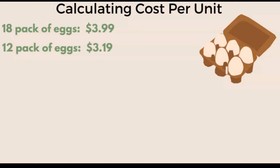Let's go through an example of how being able to calculate the cost per unit can help you save money. Using eggs as an example, let's look at how you evaluate the different sizes and packages of eggs. To calculate the cost per unit, you're going to divide the cost by the number of units.